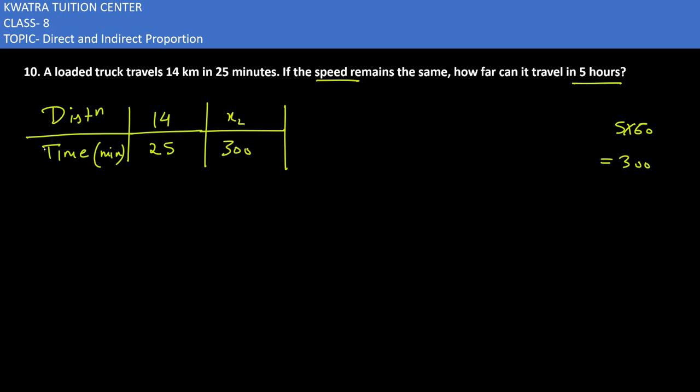And here we will find out the value of x2. Now we will find distance here. How much distance will it travel in 300 minutes? 14 over 25 is equal to x2 over 300.